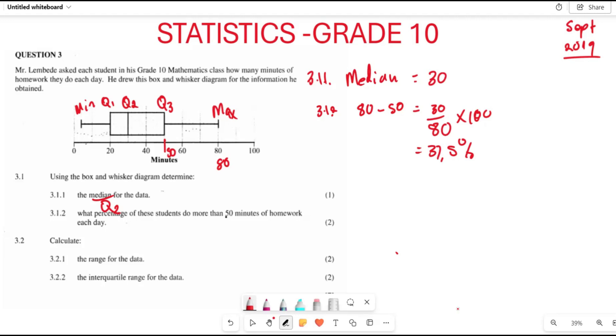Now 3.2.1 asks to calculate the range of this data. We know that the range is always given by the maximum value subtract the minimum value.